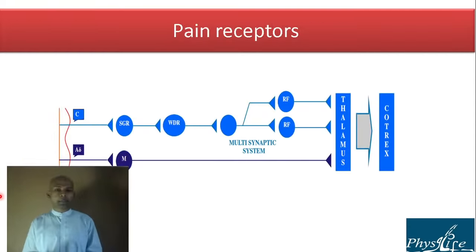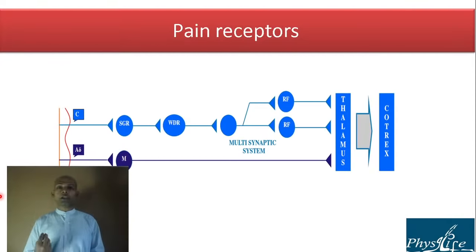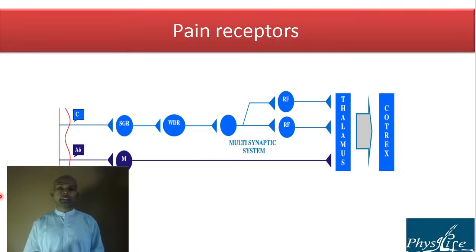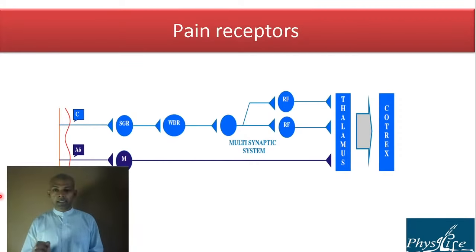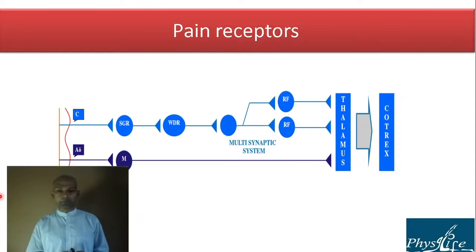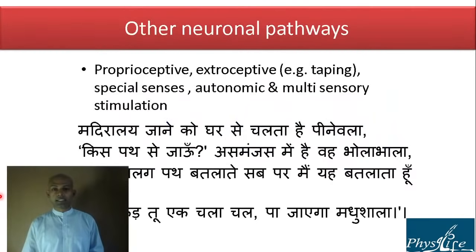Coming to pain receptors: you have the pain pathway via A-delta fibers — we'll talk about this in detail tomorrow, how dry needling stimulates A-delta. A-delta fibers are everywhere in the body, most importantly as exteroceptors on the surface. Dry needling is probably one of the most efficient ways to stimulate A-delta and produce significant analgesia.